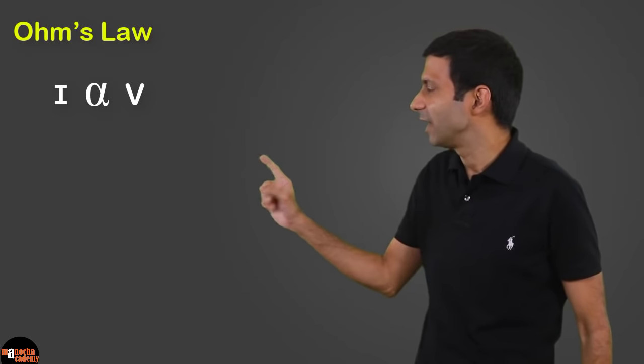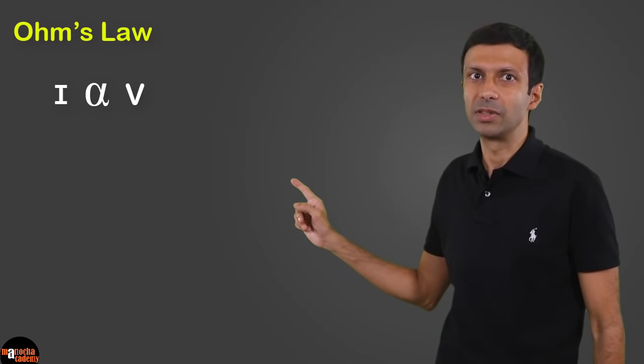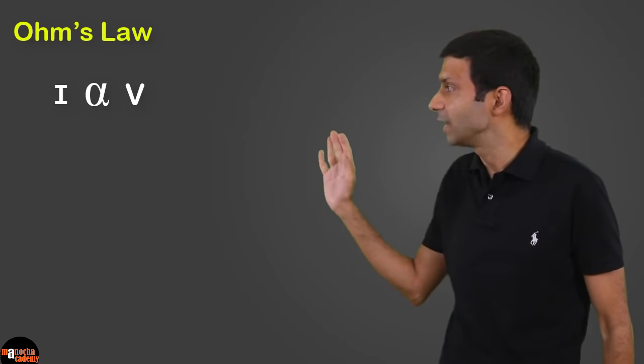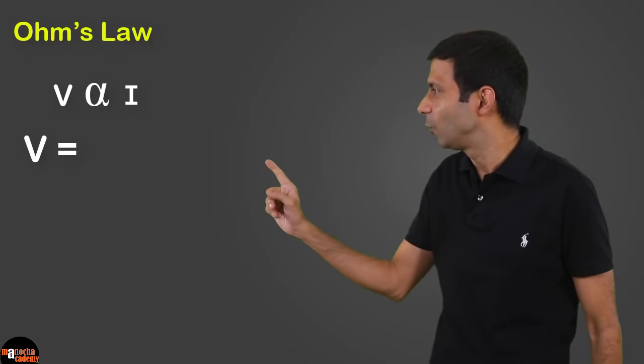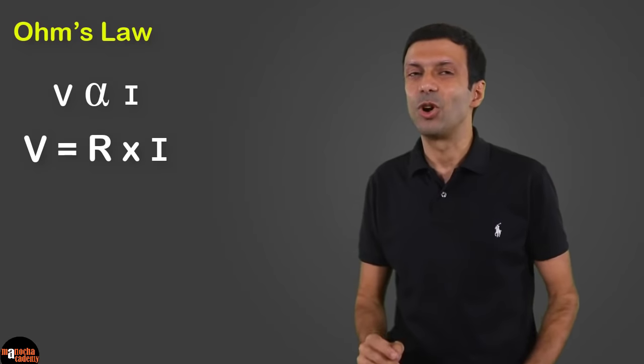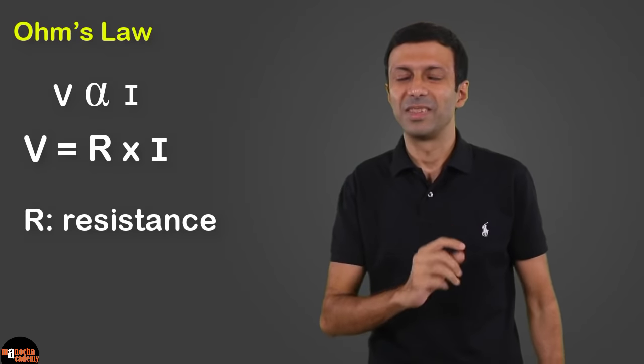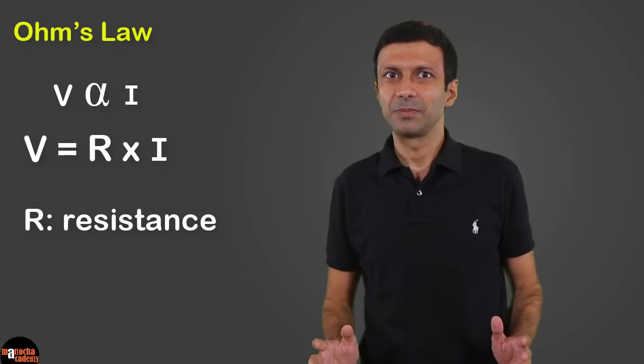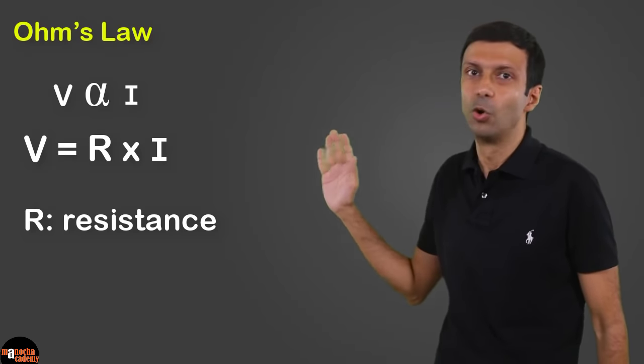Coming back to our discussion: we had current is directly proportional to potential difference, and on reversing the relation we get potential difference is directly proportional to current. Now we can change the proportional relation into an equation by adding a constant. So we get V equal to R times I. This constant R is called the resistance of the conductor — that is, the wire. So this is the mathematical relation of Ohm's law.